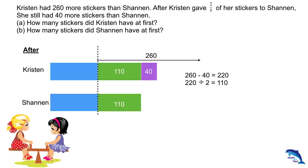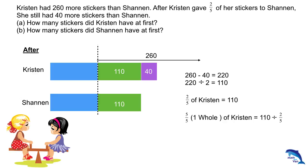You just take 260 minus 40 and the answer divided by 2, which is 110. And this actually represents the two-fifths of Kristen's number of stickers at first. So bear in mind that this is the number of stickers that Kristen had at first. Two-fifths is 110, so one whole is 110 divided by two-fifths, which equals 275. So Shannon would have 275 minus 260, which equals 15.